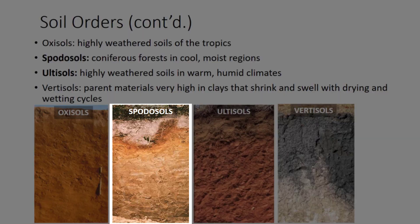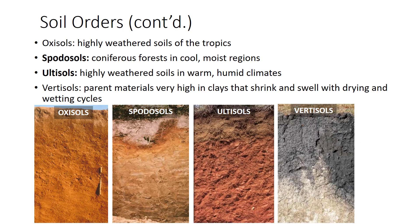Spodosols most often form under coniferous forest conditions in cool, moist regions but are also found in Florida. Spod means wood ash. They are light-colored, acidic, coarse soils often lacking in an A horizon but usually with an E horizon. Spodosols make very poor agricultural soils, useful for acid-loving plants such as potatoes, blueberries, or forests. About 5% of U.S. soils are Spodosols, mostly in the northern tier of the Midwestern and northeastern states.